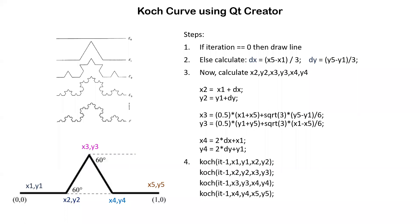Hello friends, today in this video we will see how we can draw a Koch Curve using QtCreator. Koch Curve is drawn by dividing a single line segment into four equal parts and uplifting the middle two parts in an equilateral triangle, that is by 60 degrees.